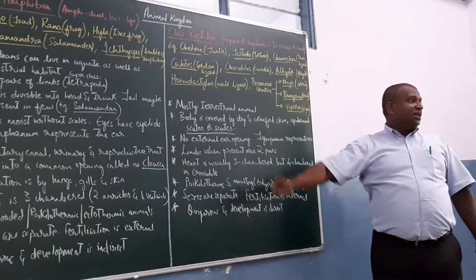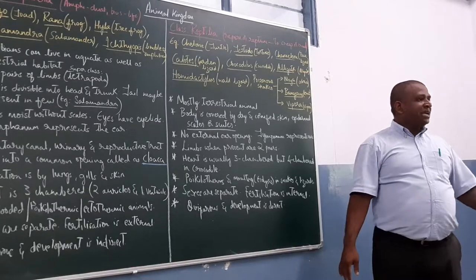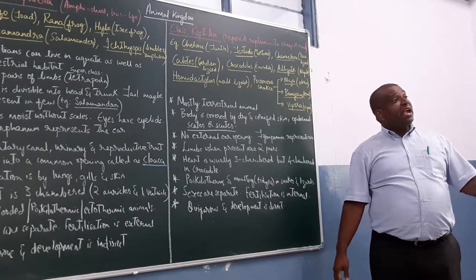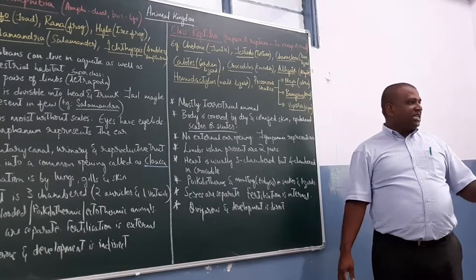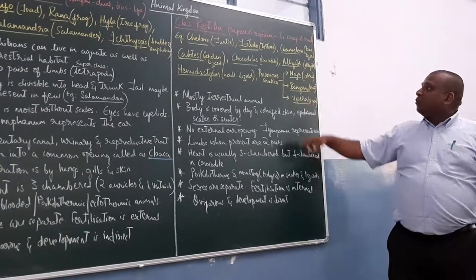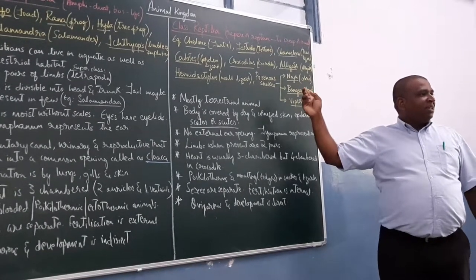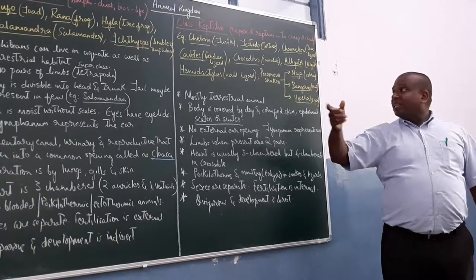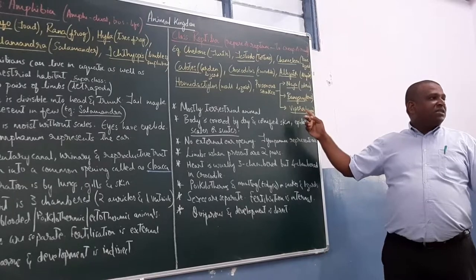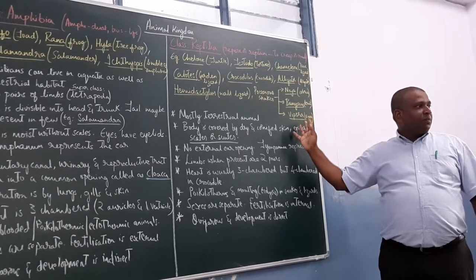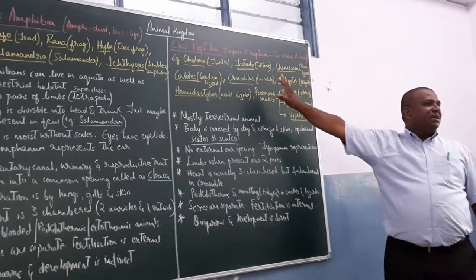Hemidactylus, wall lizard, they have pentadactyly. Hemidactylus, wall lizard. Gecko is also one variety, one of the general species, which is the house lizards that you've seen. So poisonous snakes that are found in India. Naja, king cobra. Then there is Vipera. These are the poisonous snakes. These are the examples that they have given under class Reptilia.